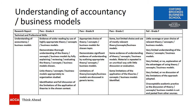So this is the assessment criteria for understanding of accountancy and business models as it appears in the information pack. You can see here we are very transparent about what you need to do to demonstrate that you have met a pass criteria at grade A, B, or C, or what the fail criteria are. If your work is not of a pass standard, then it will have failed to meet the criteria.